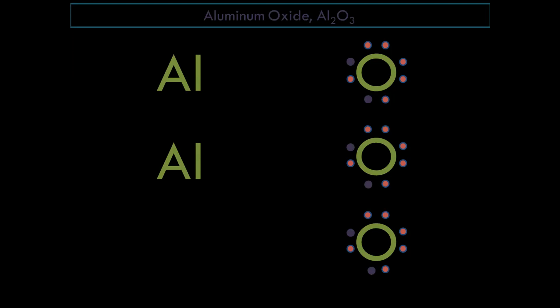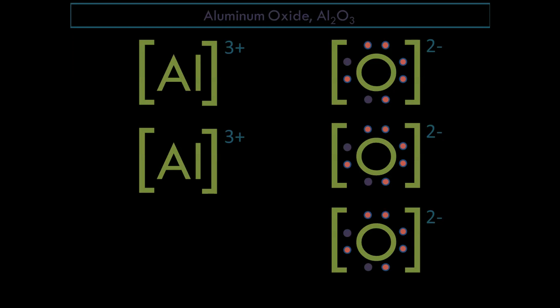Losing 3 electrons makes this aluminum have a positive charge of 3. Both of this aluminum has a positive charge of 3. All of this 3 oxygen atoms from gaining 2 electrons now has a negative charge of 2. We have 2 aluminum ions, 3 oxygen ions.